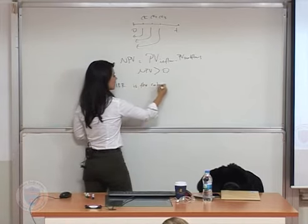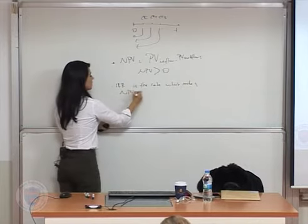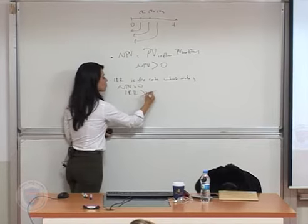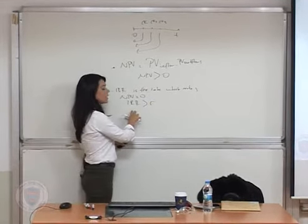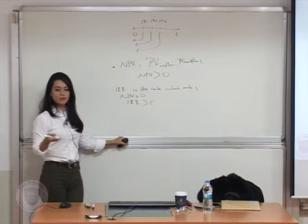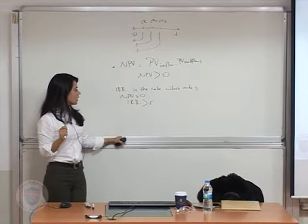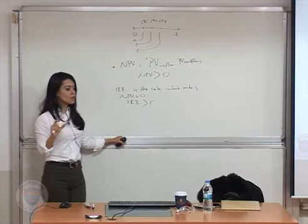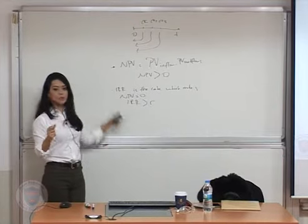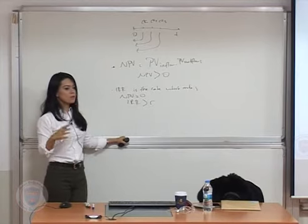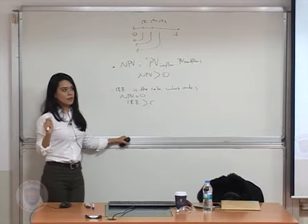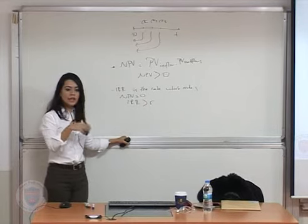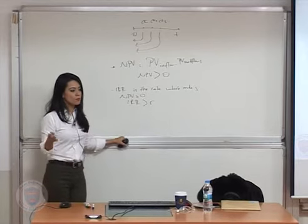Then we talked about IRR, which is the rate of return that makes NPV equal to zero. If the IRR is higher than the cost of capital in the economy for that investment, then you take the project — that's when NPV should be greater than zero. IRR is good because it ignores the scaling of projects; we're just talking about rates. But IRR has problems: in a lending or borrowing decision, the IRR of two things can be the same, whereas lending at 50% might be good and borrowing at 50% may be bad.